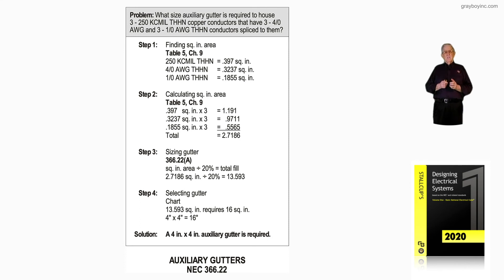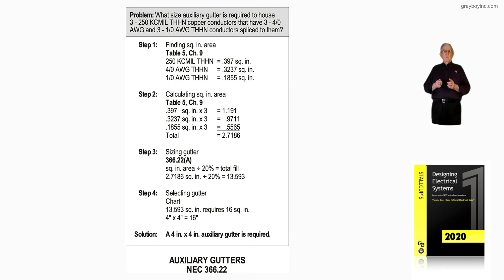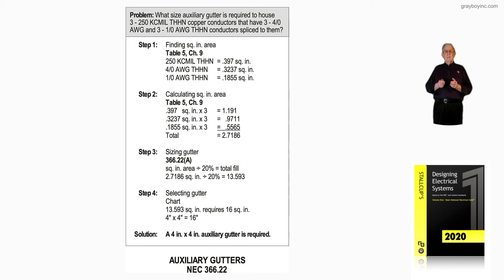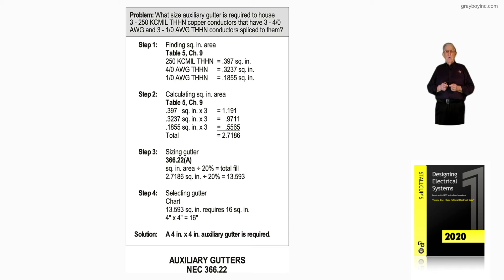Step three, we size the gutter. We're using the 20% rule, just dividing it in like we did in the quick calc — we divide 20% into 2.7186 and we come up with 13.593 square inches.